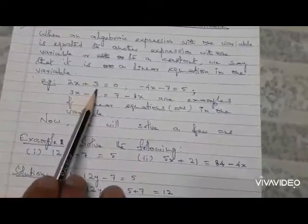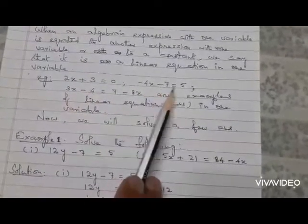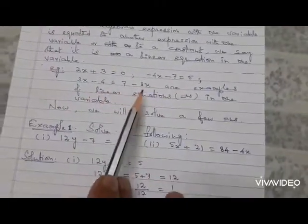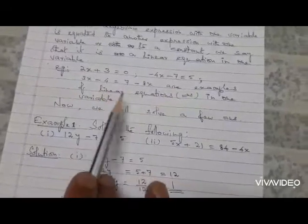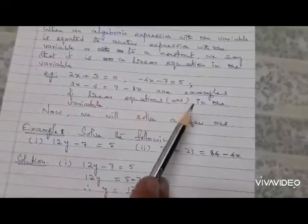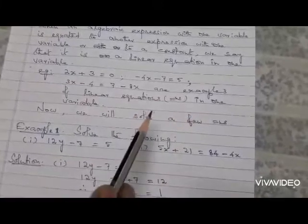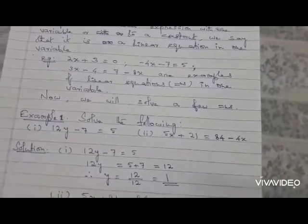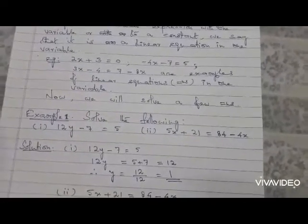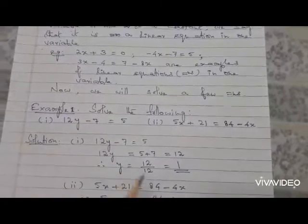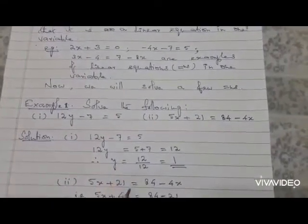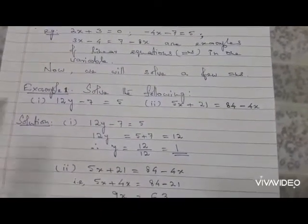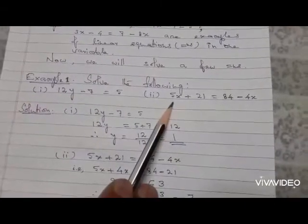For example: 2x + 3 = 0, -4x - 7 = 5, 3x - 4 = 7 - 8x. These are different types of linear equations in one variable. The variable can be any letter from A to Z in the English alphabet. Now we will solve a few equations. I am taking two to four questions.